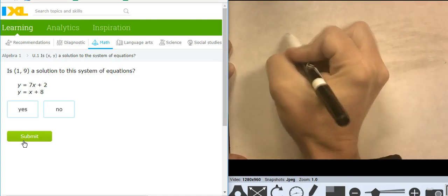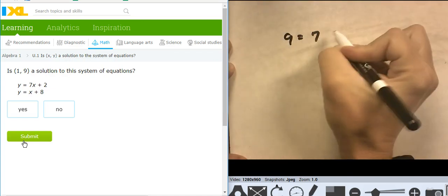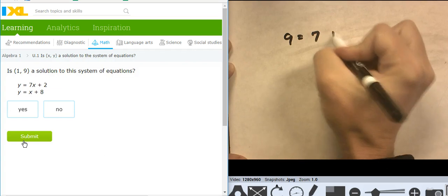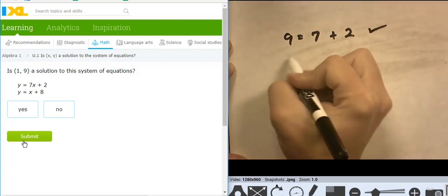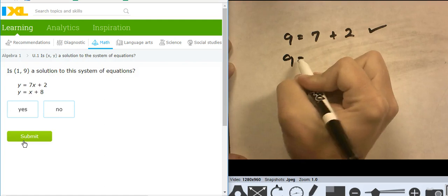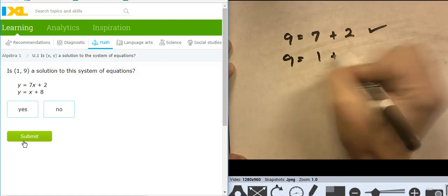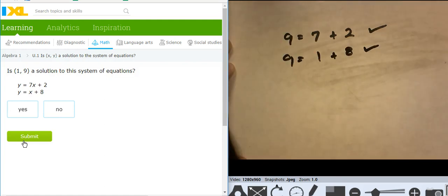Y, 9 equals 7 times 1, so 7 plus 2. That worked. 9 equals x, which is 1 plus 8. That worked. So it worked in both of them.